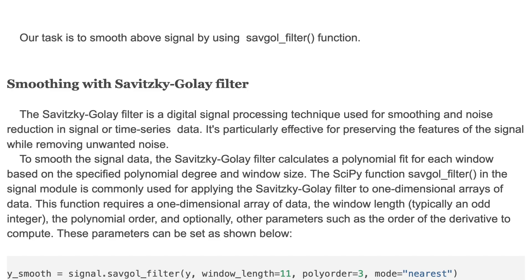The Savitzky-Golay filter is a digital signal processing technique used for smoothing and noise reduction in signal or time series data. It's particularly effective for preserving the features of a signal while removing unwanted noise.